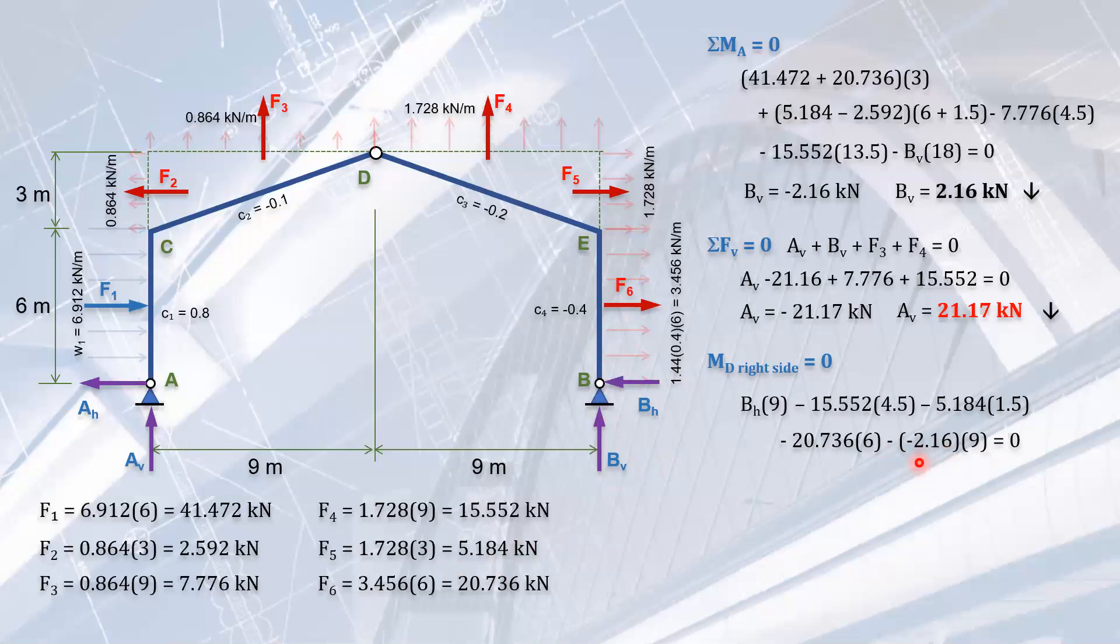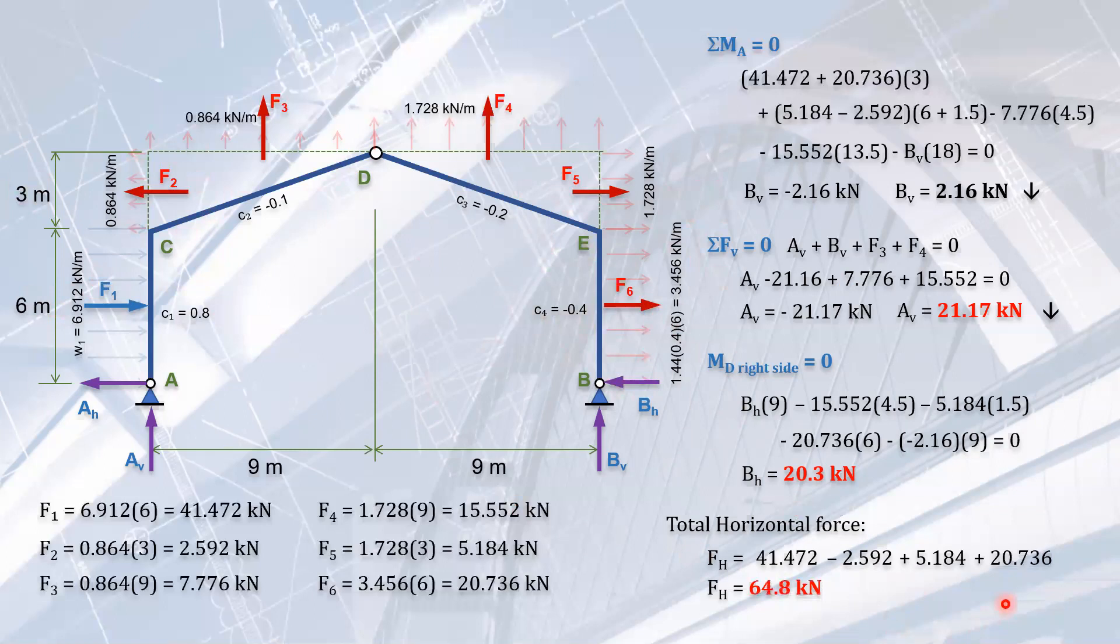The third part asks for the total horizontal force acting on the frame. That's simply the sum of F1 minus F2 plus F5 plus F6, which gives 64.8 kilonewtons. These are the answers. This is very similar to a past board exam.